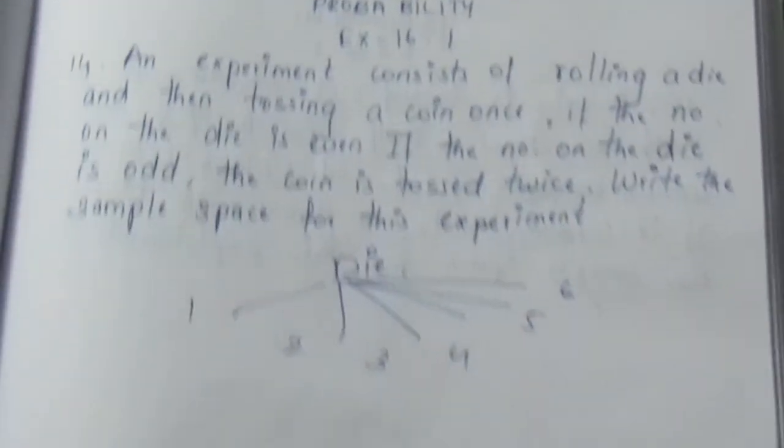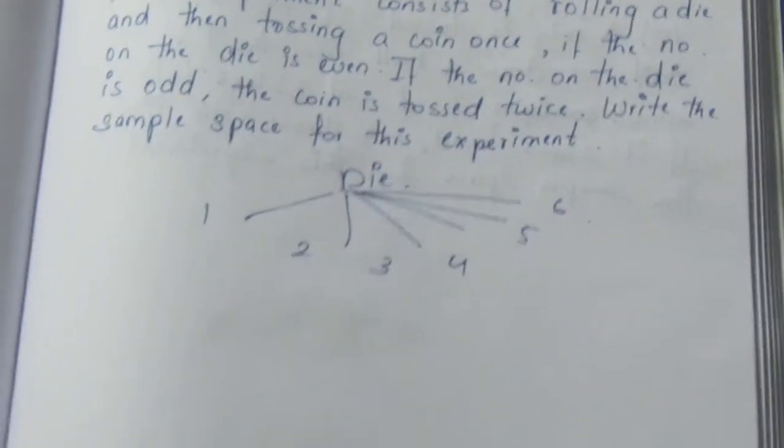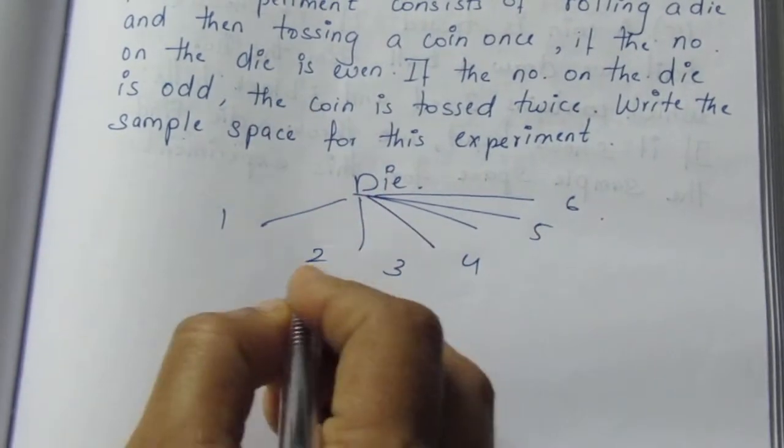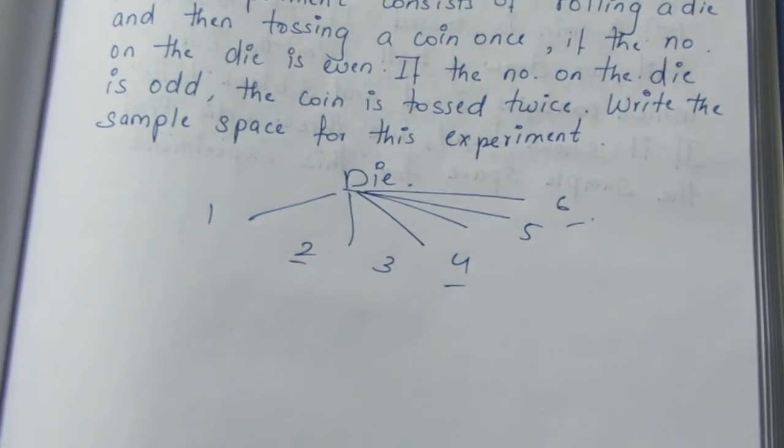Now we have a die roll, it will be 6. Now what do you say? Even number. First, the condition is even number. So we will mark this number: 2, 4, 6 is even number.